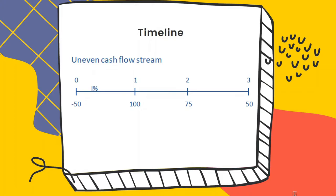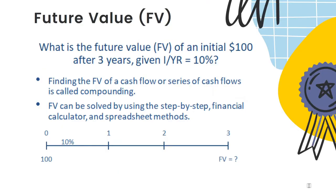Another example we frequently see is an uneven stream of cash flow, where cash flows occur at different times with different amounts. We also have positive and negative signs: the positive side represents cash inflow, and the negative side at time zero represents cash outflow. For example, under this application, the firm may invest 50 million dollars today and expect to get positive cash flows coming into the firm over the next three years, with an opportunity cost of i percent.